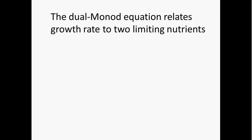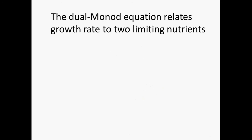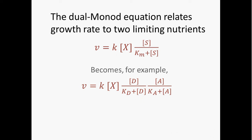We can also account for more than one limiting nutrient. When we account for two limiting nutrients, we refer to that as the dual Monod equation. In this case the limiting nutrients correspond to electron donation and electron acceptance — the electron donor is one substrate and the electron acceptor is the other. We can simplify this by expressing one factor related to electron donation and one factor related to electron acceptance. That is the form of the Monod equation I keep presenting in lecture.